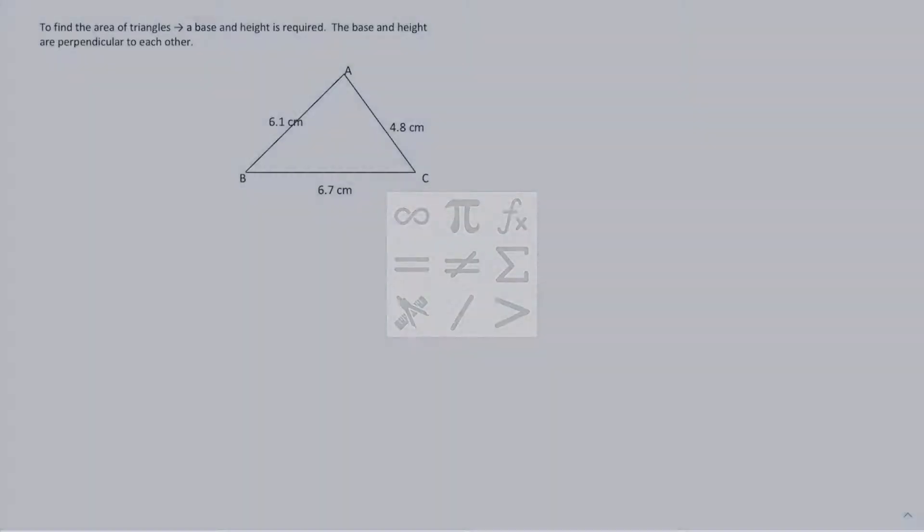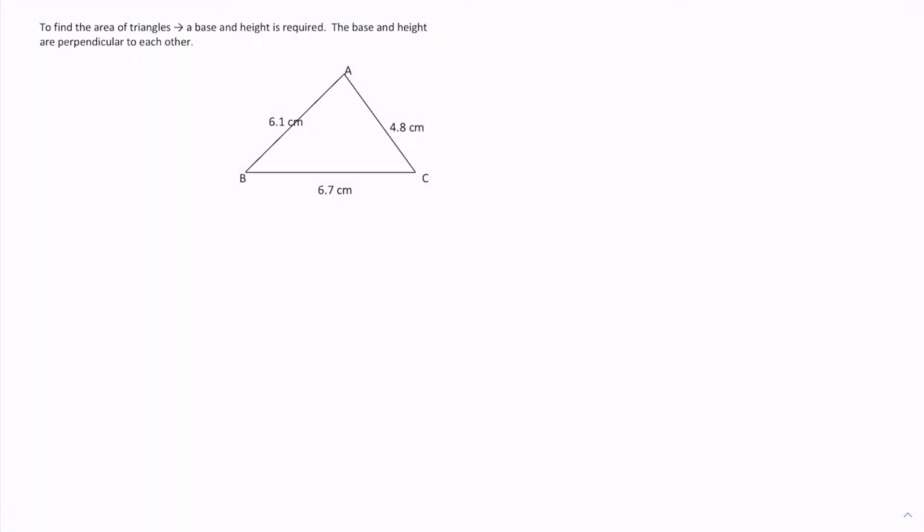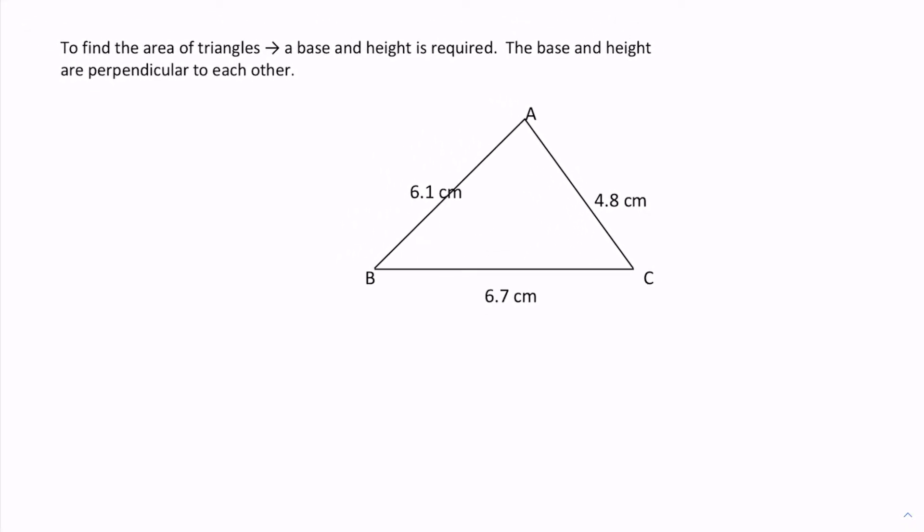We're given a triangle here with various side lengths and we want to find the area of this triangle with just this information we have. Now if you recall just the areas of various shapes, we know that the area of a triangle is one-half base times height.